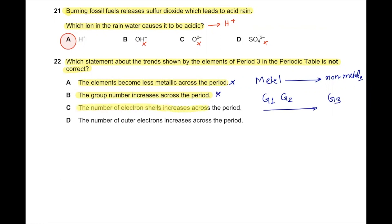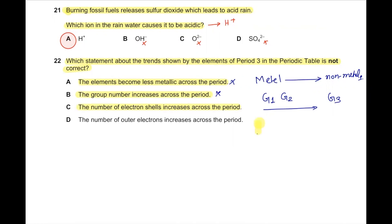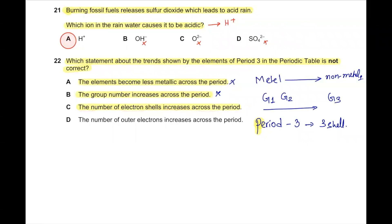Option C states the number of electron shells increases across the period. We know that across period 3, every element has 3 shells — the number of shells does not increase. Since this statement is not correct, and the question asks us to find the incorrect statement, 22C is the answer. Option D, the number of outer electrons increases across the period, is correct because group number increases across the period.